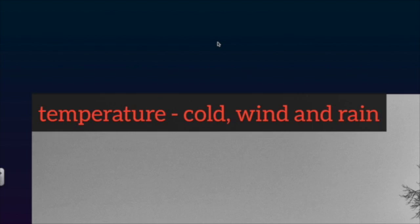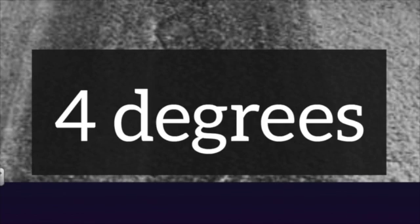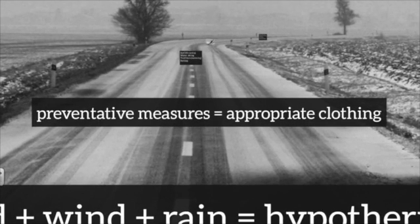Looking at the combination of cold, wind and rain — because of Australia's climate, this is generally not such a big issue. Temperatures need to get below 4 degrees before hypothermia is of concern. However, higher temperatures combined with wind and rain can create significant wind chill where hypothermia could become an issue. Preventative measures include wearing waterproof clothing, wind jackets and polar fleeces, particularly applicable to outdoor sports like running in winter months.